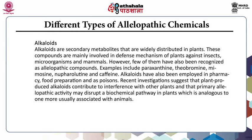The next class is alkaloids. These compounds are mainly involved in the defense mechanism of plants against insects, microorganisms and mammals. However, few of them have also been recognized as allelopathic compounds — for example, paraxanthine, theobromine, mimosine, nuphrolotin and caffeine. They have been employed in pharmacy, food preparation and as poisons. Recent investigations suggest that plant-produced alkaloids contribute to interference with other plants, and that primary allelopathic activity may disrupt a biochemical pathway in plants analogous to one more usually associated with animals.